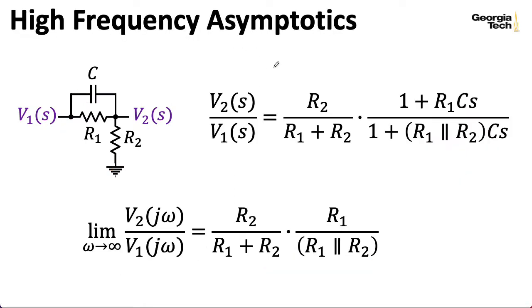Let's explore what happens to our transfer function for the voltage divider if we plug in j omega for s and let omega go to infinity. Well, these one terms are going to become insignificant as omega goes to infinity, and basically, this whole factor here is going to turn into R1 over R1 in parallel with R2 because the Cs are going to cancel.